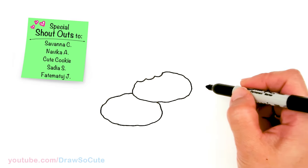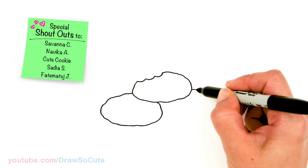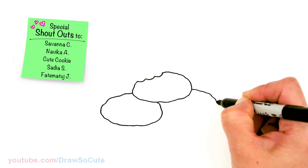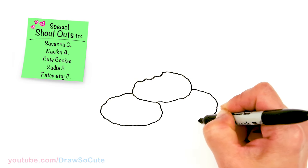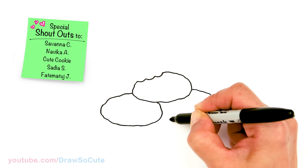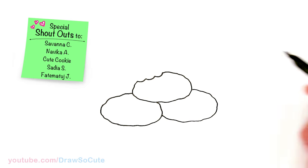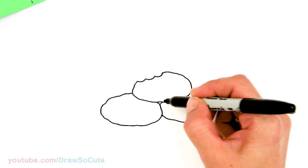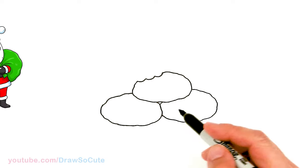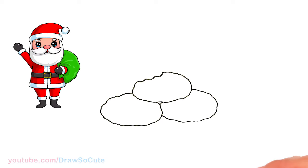And so then I'm just gonna add one more. So come about right here. And maybe come through here, add a little curve right there. Okay so then we have our three cookies in.